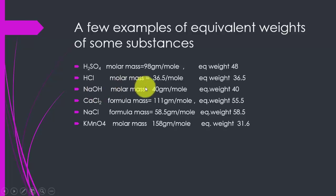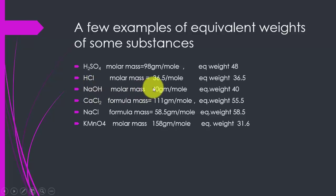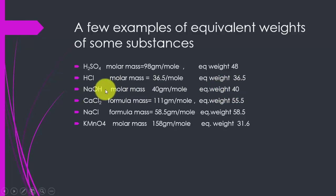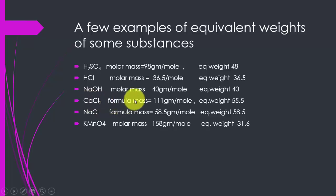In the case of a base, equivalent weight is equal to molar mass divided by the number of ionizable hydroxyl ions. For NaOH, we have just one ionizable hydroxyl ion, so 40 divided by 1 gives an equivalent weight of 40.